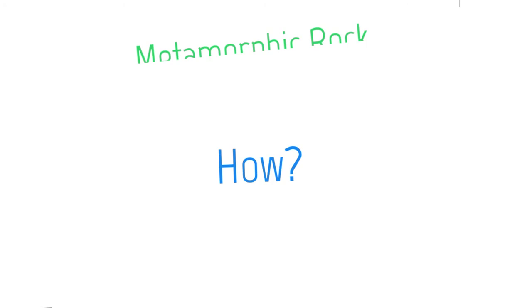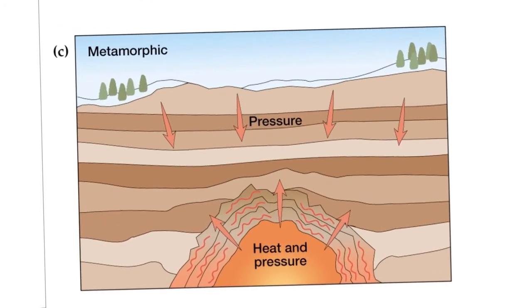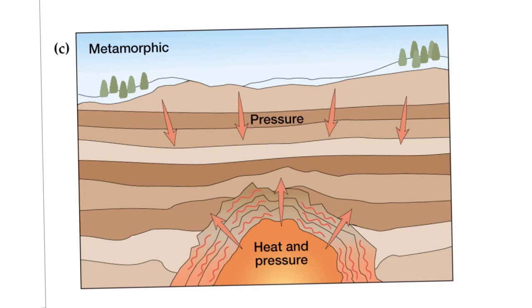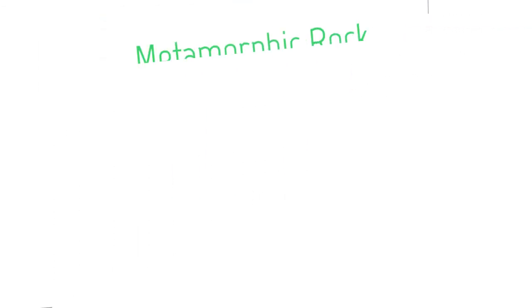Time for our last rock: the metamorphic rock. Before we look at examples, we have to figure out how these rocks are formed. Look at these layers — we could have sedimentary rock or igneous rock mixed in. Metamorphic rock can change from any other rock; it just takes two things: high heat and pressure. The magma down here pushes up through the layers, heating them up, while pressure comes from below or above. That intense pressure and heat eventually changes the rock to become metamorphic.